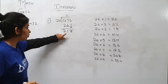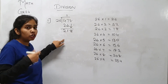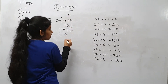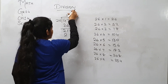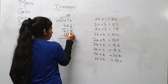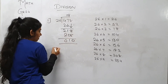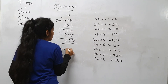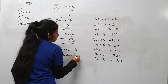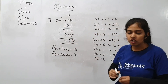Now we want 218. 26 nines are 234, so 234 is greater than 218, so we will go with 26 eights, which are 208. 8 minus 8 is 0, 1 minus 0 is 1, 2 minus 2 is 0. So after solving this, your quotient is 18 and the remainder is 10.